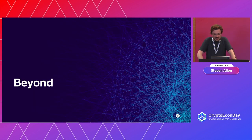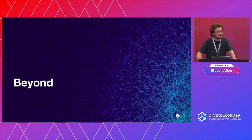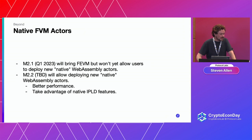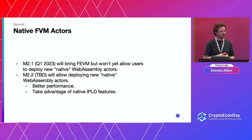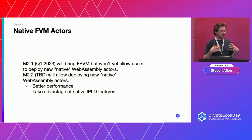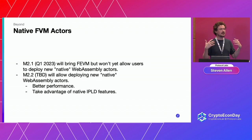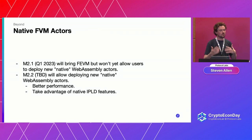That covers the basics. Looking forward to M2.2: in M2.1, which is Q1 next year, we're launching the FEVM, allowing users to deploy EVM smart contracts. In M2.2, we will allow users to deploy arbitrary native smart contracts — they'll be able to deploy their own custom WASM smart contracts. The reason people might want to do this is you get better performance because you're not running inside a VM inside a VM — you're running directly on the root VM — and you'll be able to take advantage of native features like IPLD support.